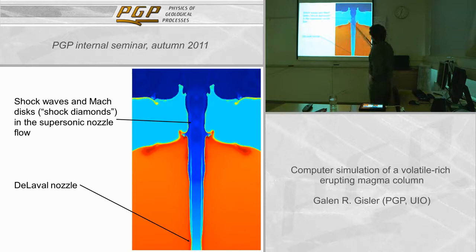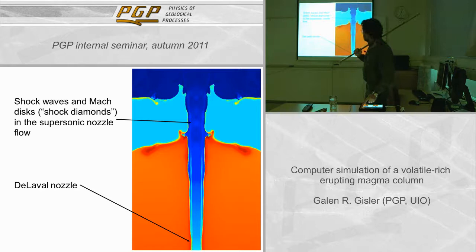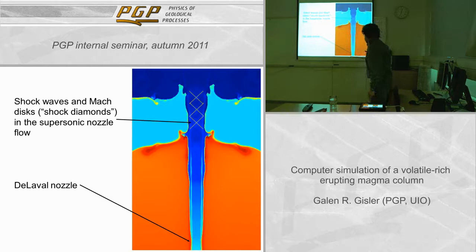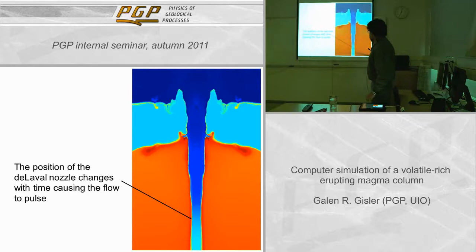To prove that the flow is supersonic you only have to look for the existence of shocks and Mach disks, or shock diamonds. Can everybody see that? I will outline them here in these dotted yellow lines — there are three of them, clearly visible, and there are others down here which are less clearly visible. It's clearly a very strong supersonic flow. Here's the de Laval nozzle — the narrowest point in the flow where you get the first shock and where the flow transitions from subsonic to supersonic. The de Laval nozzle moves with time, and sometimes you can see it go down as well, causing the flow to pulse.